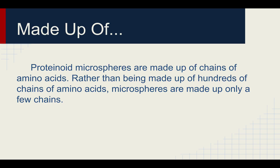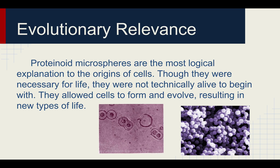The composition of protonoid microspheres: they're pretty much a chain of amino acids, and rather than being made up of hundreds of chains of amino acids, they're made up of only a few chains. Evolutionary relevance: protonoid microspheres are the most logical explanation for the origin of cells, and though they were necessary for life, they were not technically alive to begin with according to our modern-day definition. But they did allow cells to form and evolve, resulting in new types of life that have pretty much taken over the Earth today.